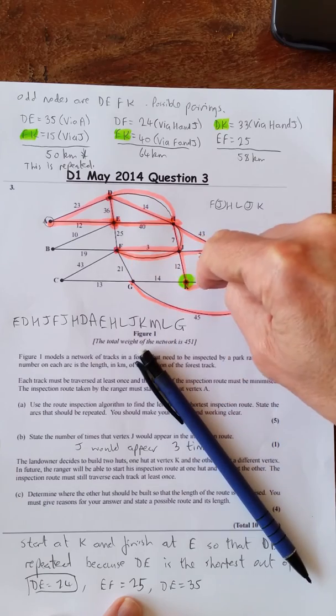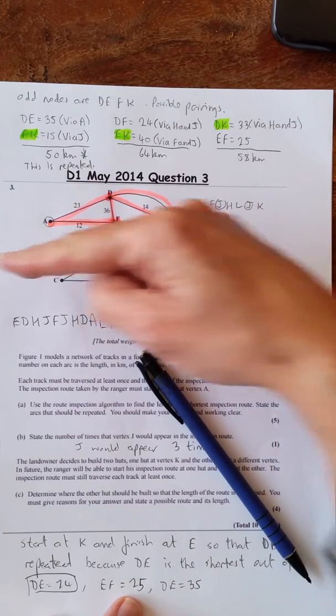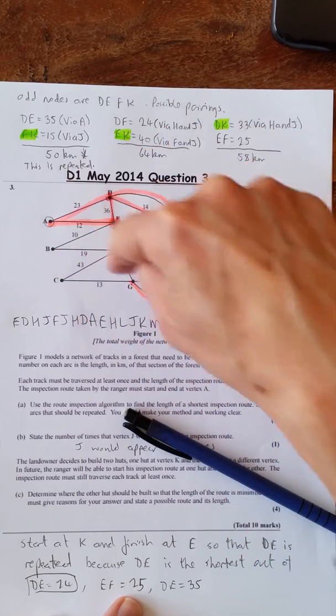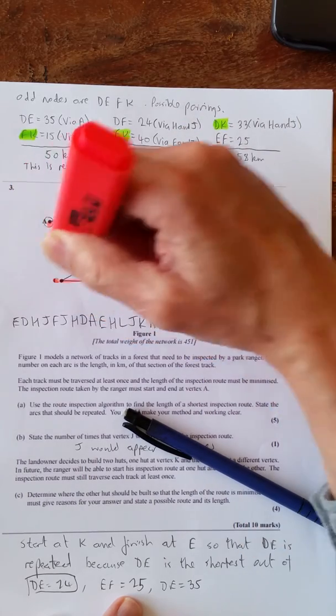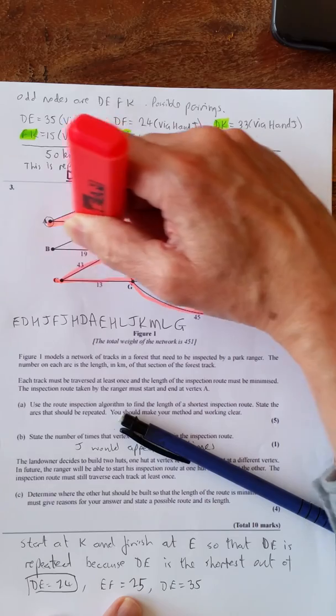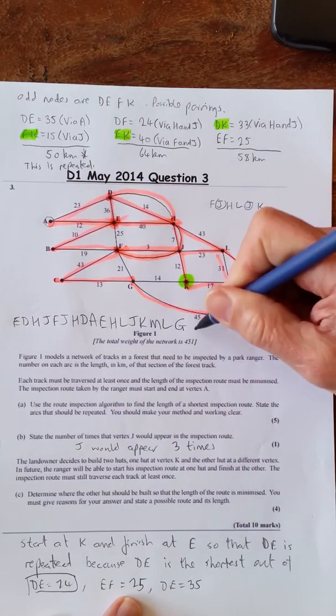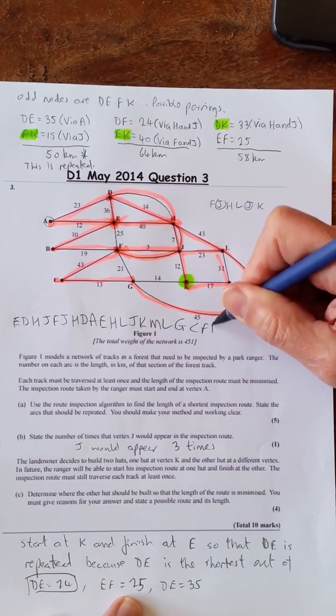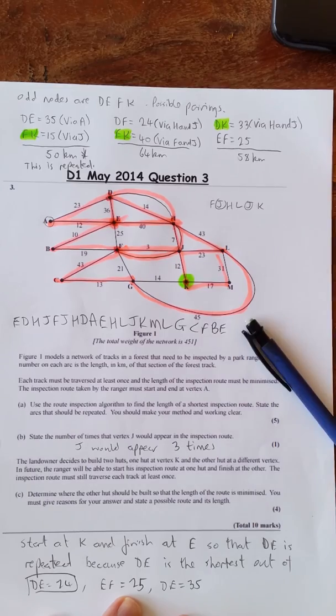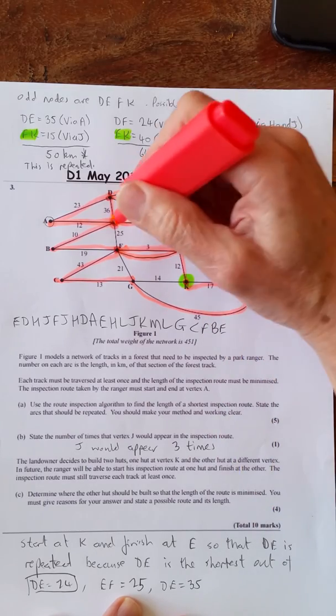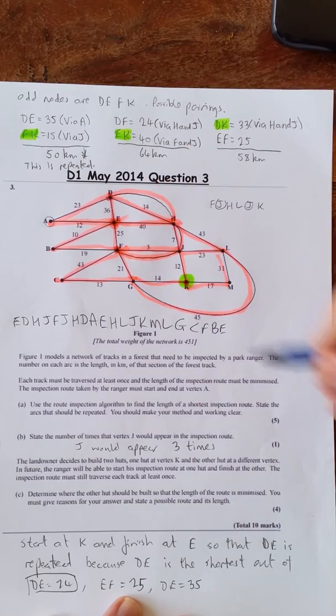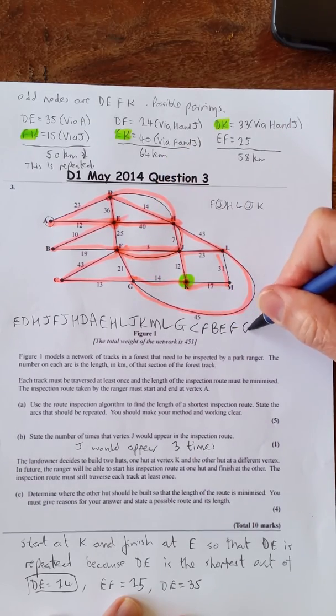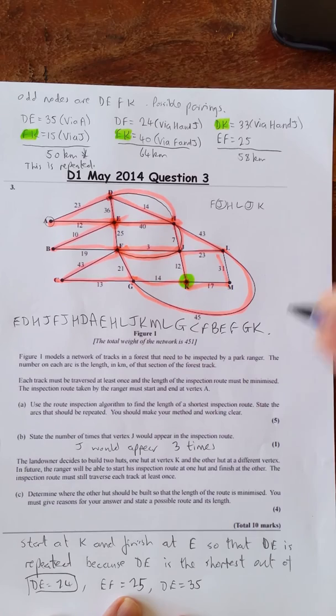Now I want to finish at K, so I'm not going to go that way this time, I'll go this way. And you can see a route that's coming up. So I'm going to go this way. We've got C, F, B, E. And then finish off. We know we're finishing at K, so it's going to be F, G, K. That's it.